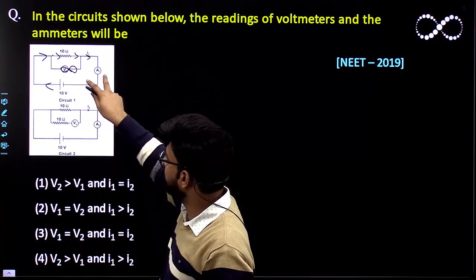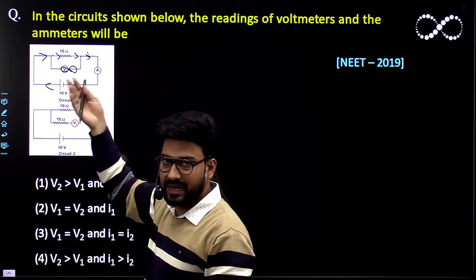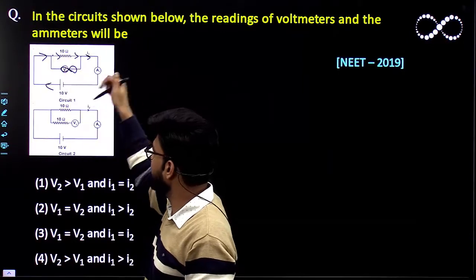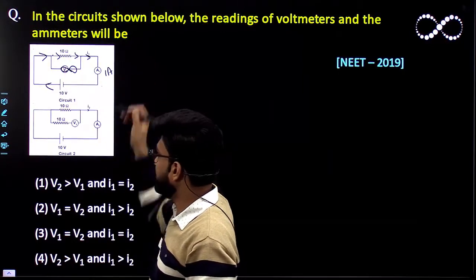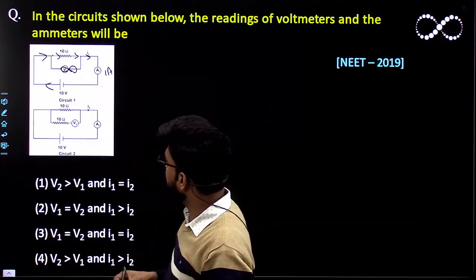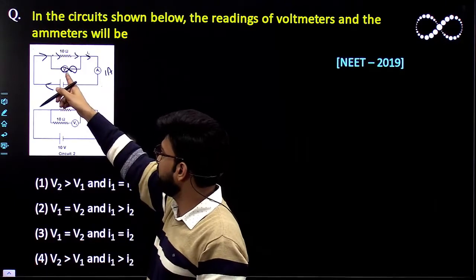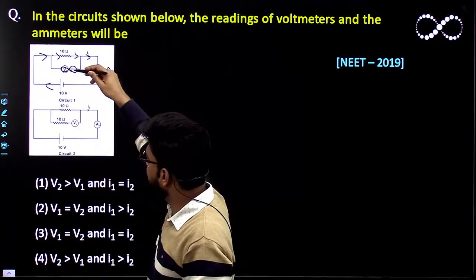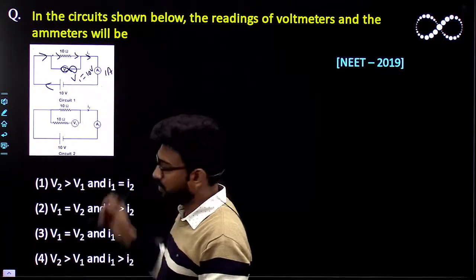So the reading of the ammeter I1 is I equal to V by R, V is 10 volt and R is 10. So that means the ammeter reading would be 1 ampere. So I1 is 1 ampere and what about V1? V1 potential difference is same as across the battery. So V1 would be 10 volt.